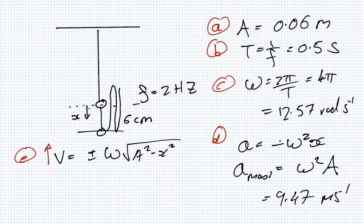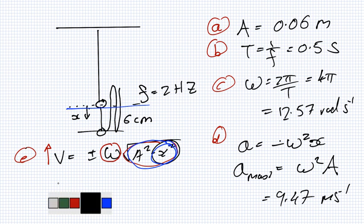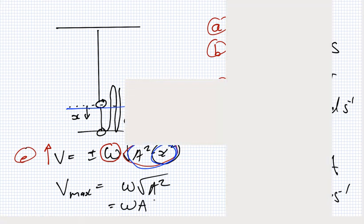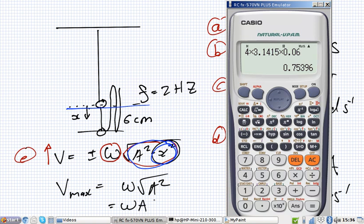So to make this biggest we have to make, well we can't change that, we have to make this biggest. The only thing we can change here is the X. So to make this bigger we need to make this smaller. The smallest it can be is zero when it's at the origin. So the maximum velocity will be ω root A² which is just ωA, which is 0.75396. So that's the answer there, 0.754.